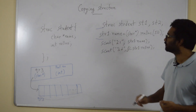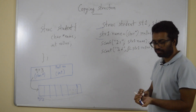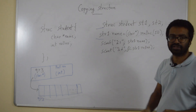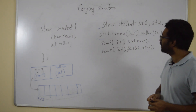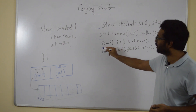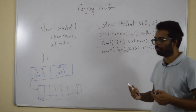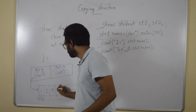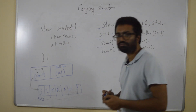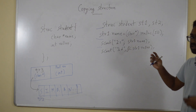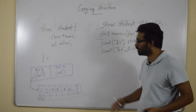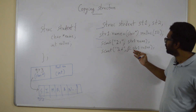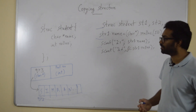Scanf is passed address 973. Scanf reads the name from the user — let's say the name is Simran — and stores it at that memory location. The role number is also taken from the user and stored in the role number field.